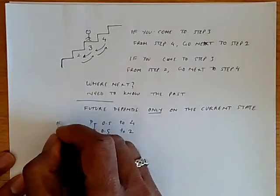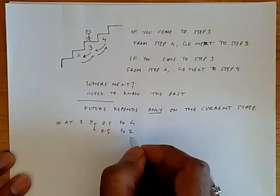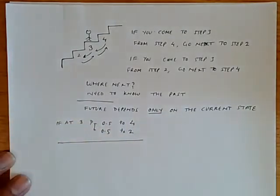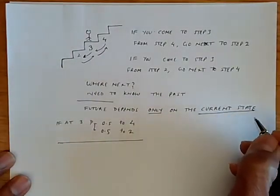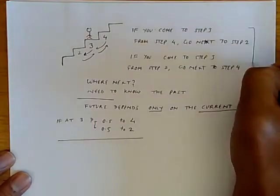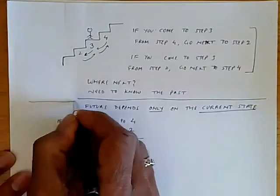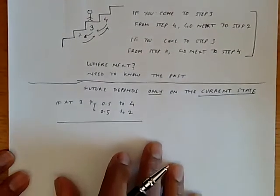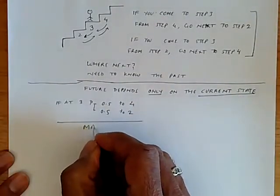So if at three, the probability 0.5 go to four, probability 0.5 go to two. This does not depend on past history. It only depends on the current state. Whereas this set of rules depends on the past history. So even if the future cannot be completely and deterministically known, the future depends only on the current state, then we call this a Markov process.